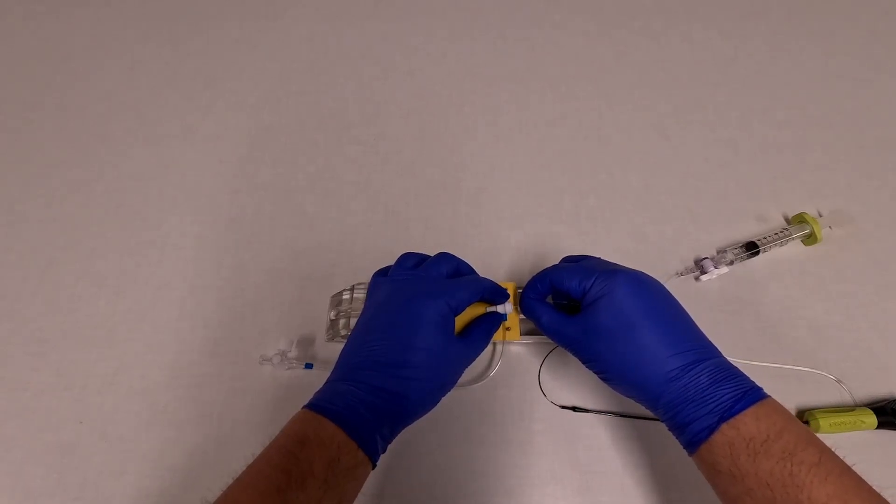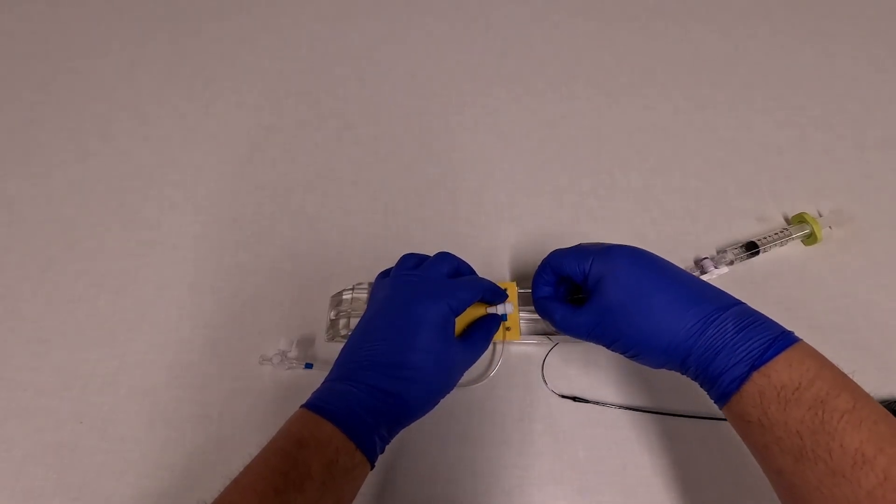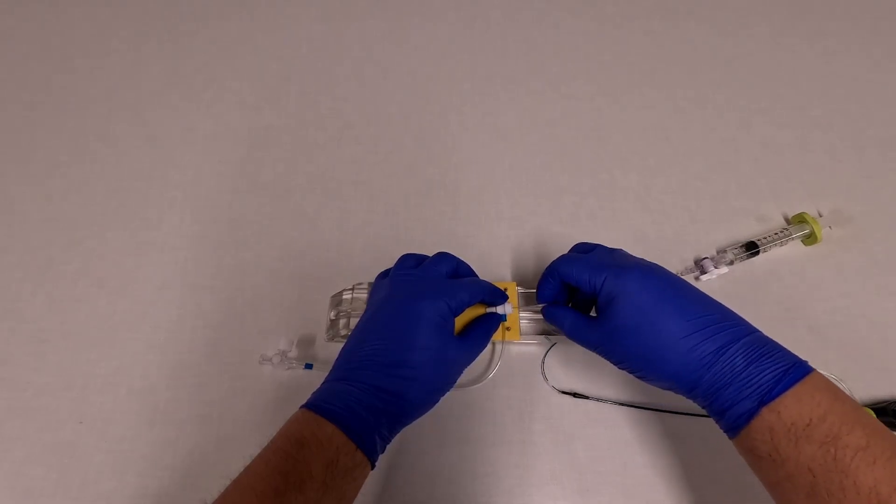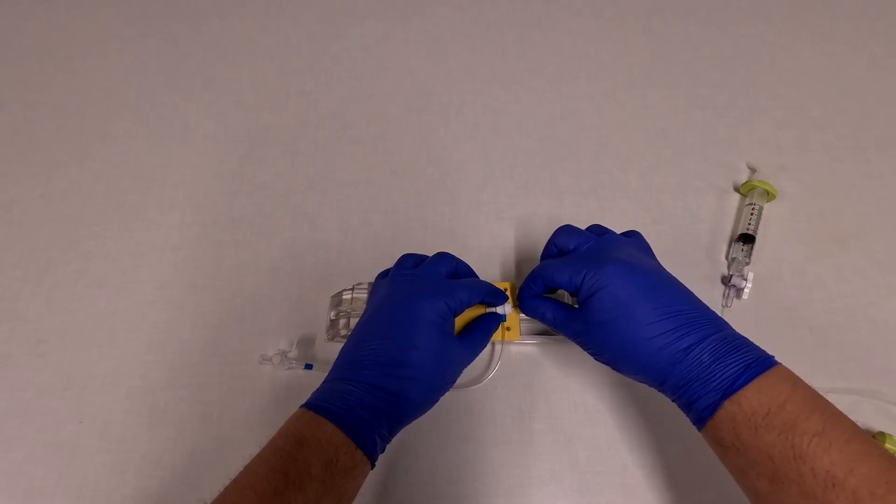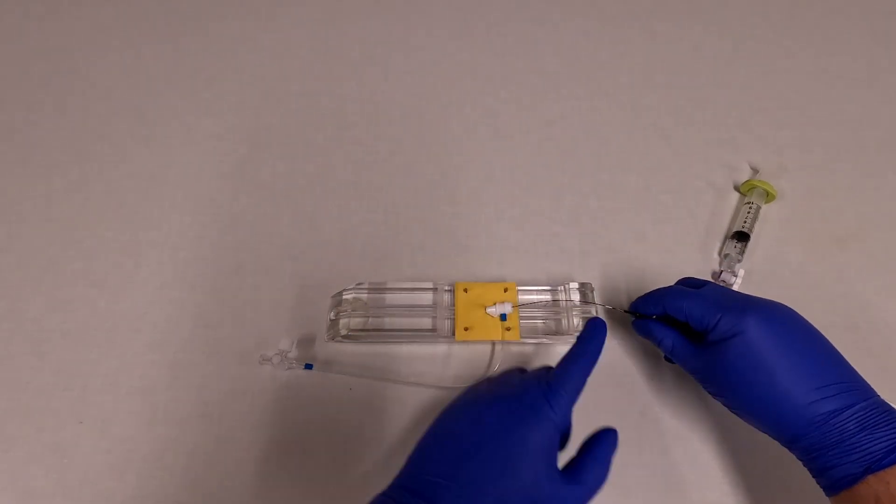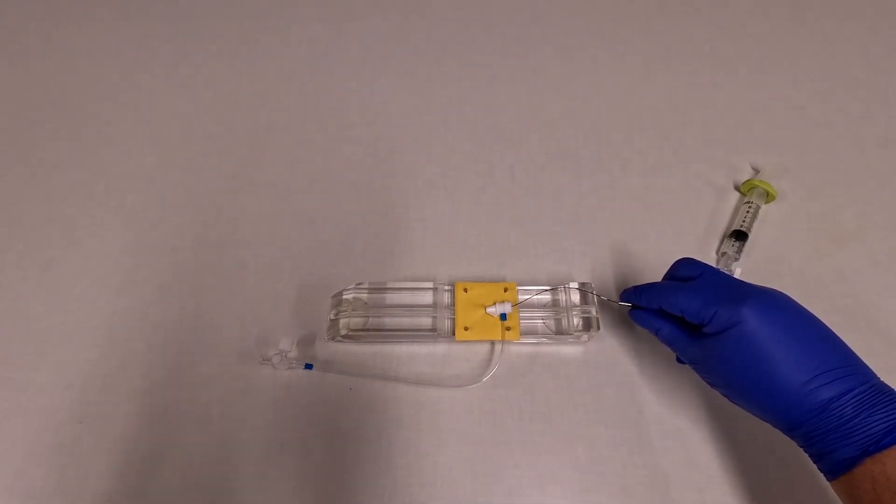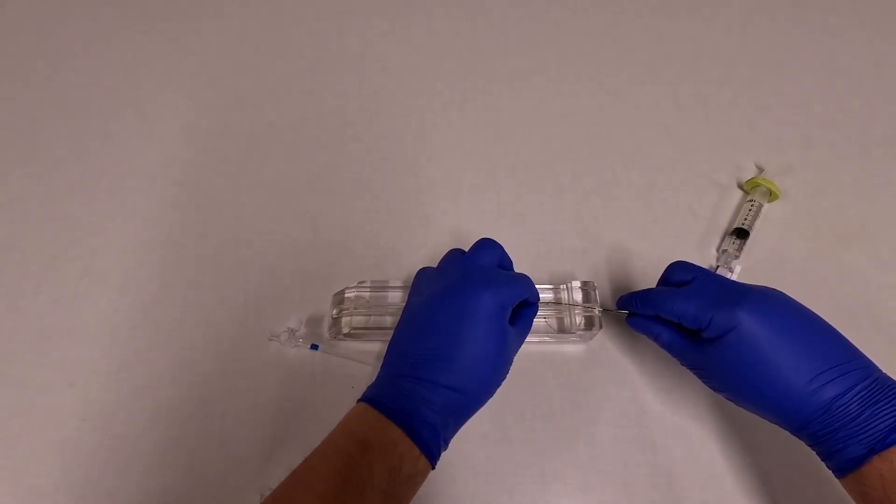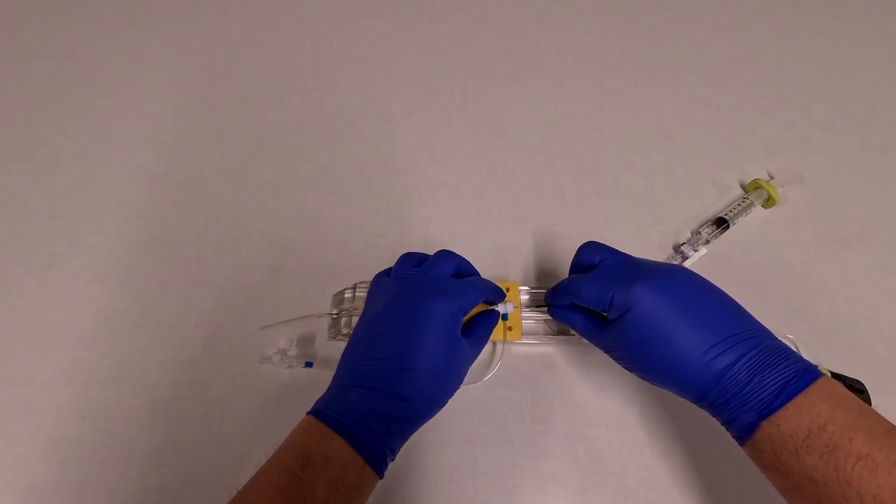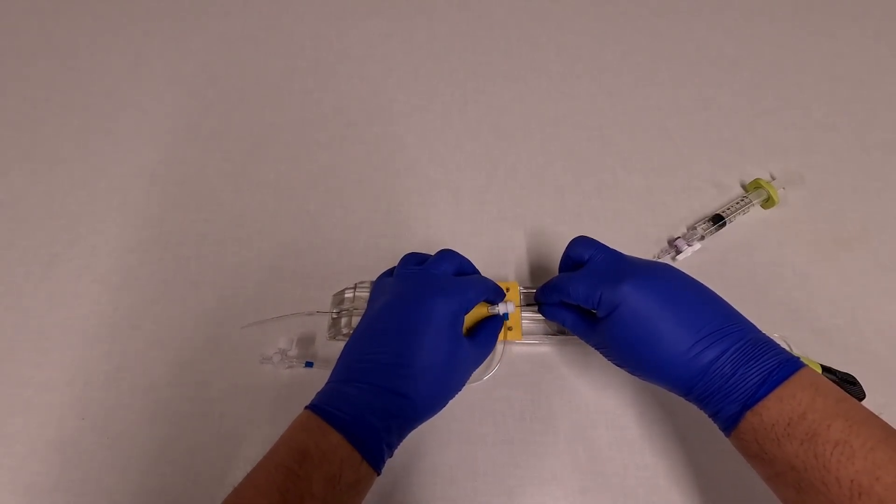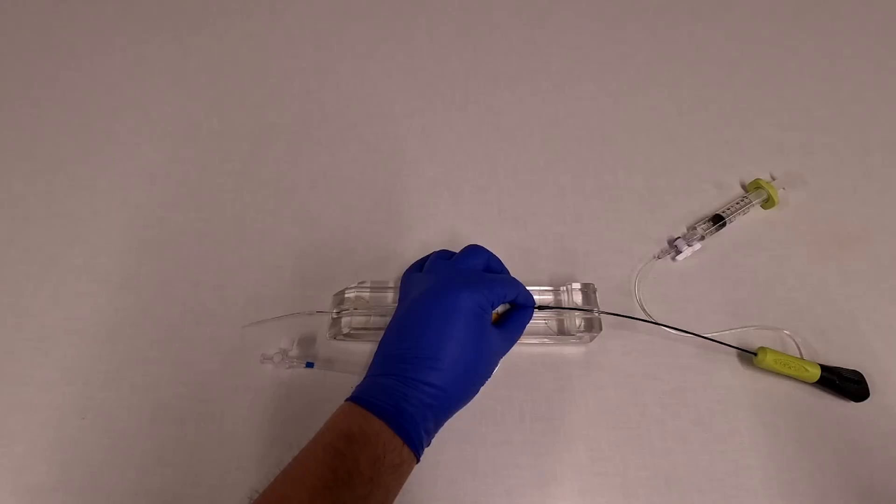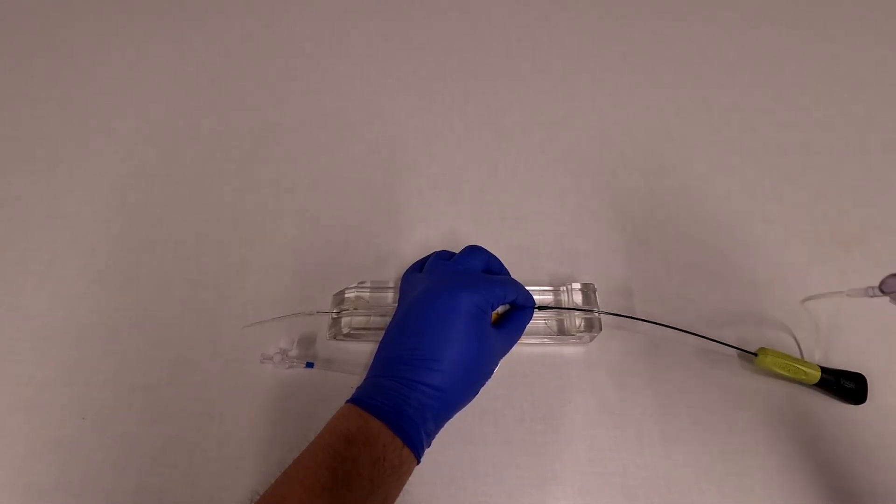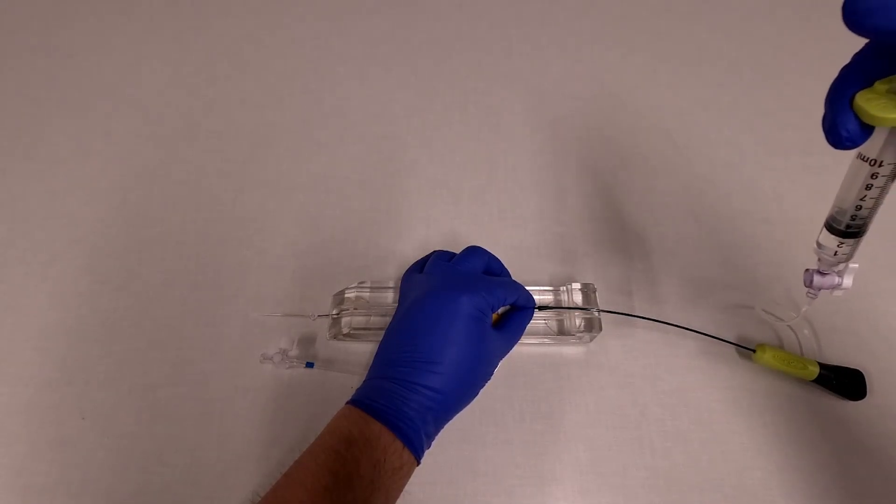Now we're going to take the device and insert it into the sheath. Hold it close to the tip so that you can push it into the sheath. And then keep inserting until you reach the white marker. You can see the white marker here. And you're going to insert it until the white marker reaches the hub of the sheath. This means that the balloon is in the vessel.